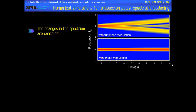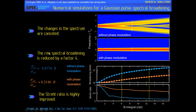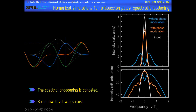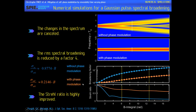We may quantify how well it works by using the RMS spectral broadening factor, which takes into account the presence of spectral side-lobes. We can make the calculation analytically, and what we see is that using a sinusoidal phase modulation decreases by a factor of 4 the RMS broadening factor. We can also calculate the Strehl ratio — the ratio between the power at the central frequency with mitigation and the power at the central frequency for the input pulse — and using the phase modulation, the Strehl ratio is significantly increased. Sinusoidal phase modulation is highly beneficial.